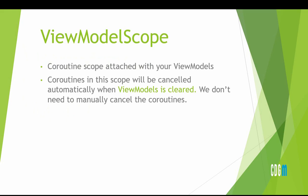The next one is viewModelScope — a coroutine scope attached to the ViewModel. Same as lifecycleScope, it is attached to the ViewModel. When the ViewModel is destroyed, this scope is also destroyed. The ViewModel has an onClear() function, and when the ViewModel gets cleared, this scope would also be destroyed.